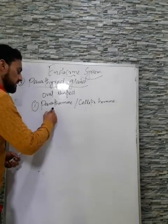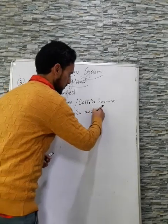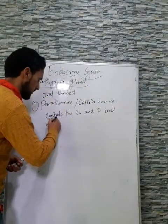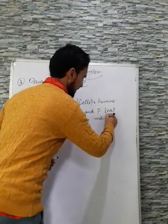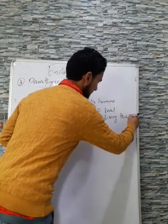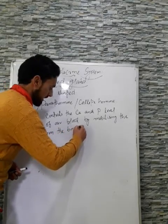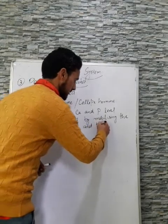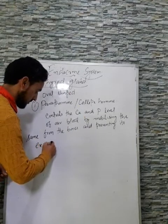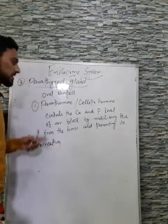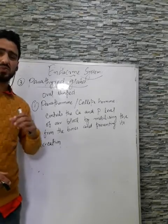The function of parathyroid hormone (parathormone) is to control and maintain the calcium and phosphorus level of our blood — by mobilizing calcium and phosphorus from the bones whenever required, and also by preventing their excretion through the urine.